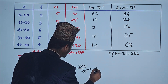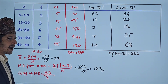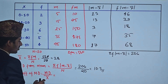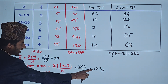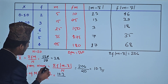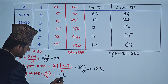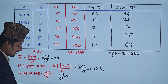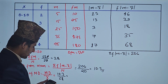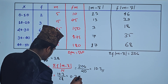Mean deviation = 206 ÷ 20 = 10.3. So the mean deviation from mean is 10.3. Now applying the coefficient formula: 10.3 divided by mean (28) gives the coefficient of mean deviation = 0.367.